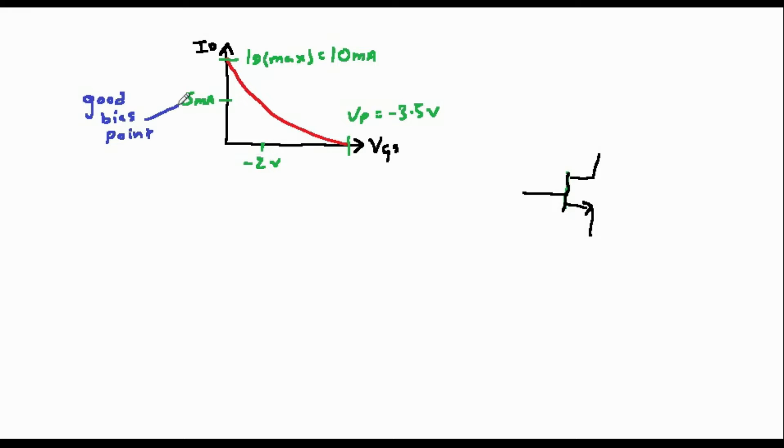The best way to illustrate this is by an example. Supposing that we have an FET with a characteristic curve shown on the screen. Now from our discussion in our last video, we know that a good place to bias this FET is at half of ID max. And this occurs when VGS is equal to minus 2 volts.